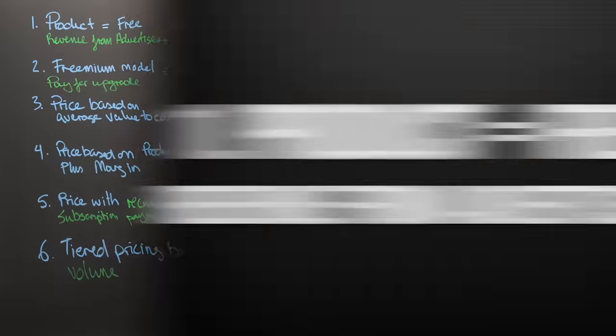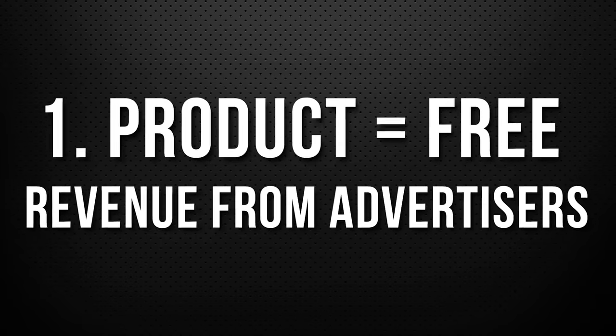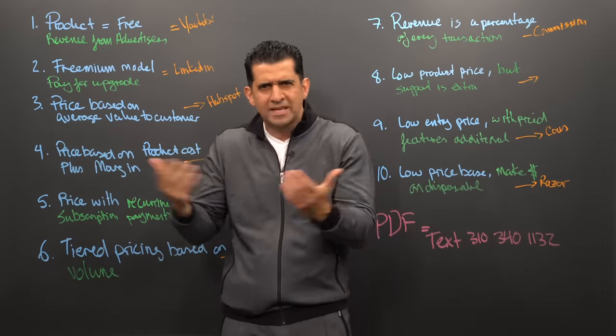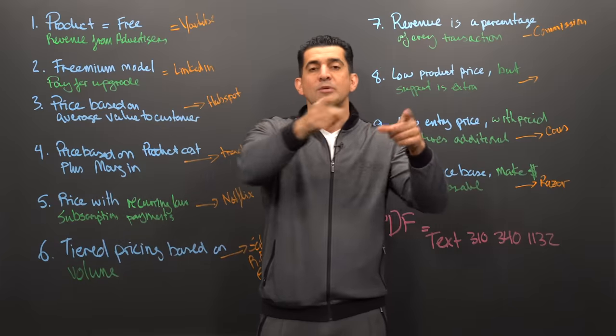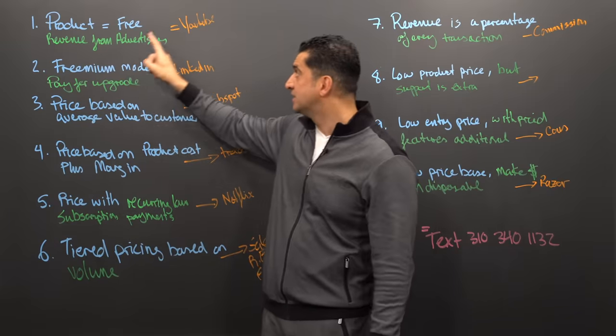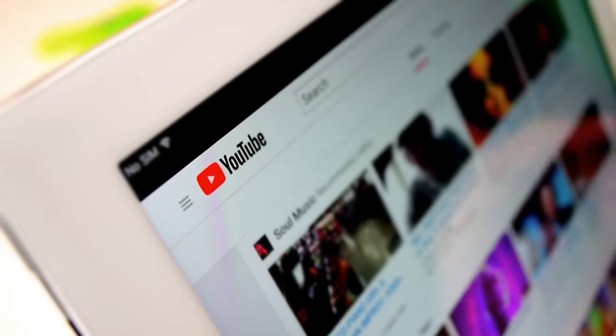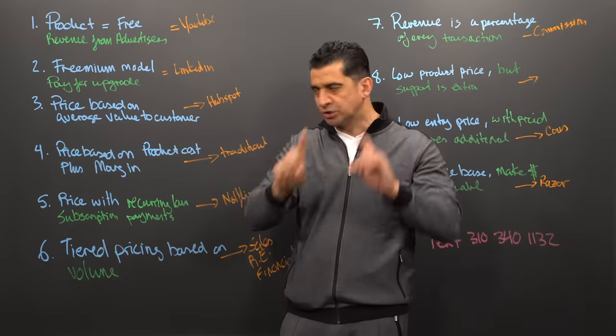The first one is you give the product away for free. A lot of times people wonder why they're giving away the product for free — because they make the money on the back end of advertising. Example: YouTube. Many companies do this. This is one of the models.